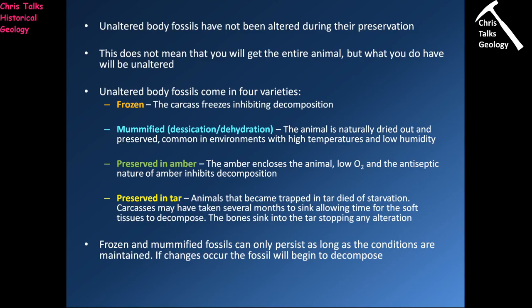The third type of unaltered body fossil is fossils preserved in amber. When amber encloses the organism it cuts it off from the atmosphere, meaning no oxygen can get to the carcass and decomposition cannot occur. Amber is also antiseptic, so it sterilises the exterior of the organism, reducing the chance of decomposition by killing off any decomposing bacteria on the outside of the shell.